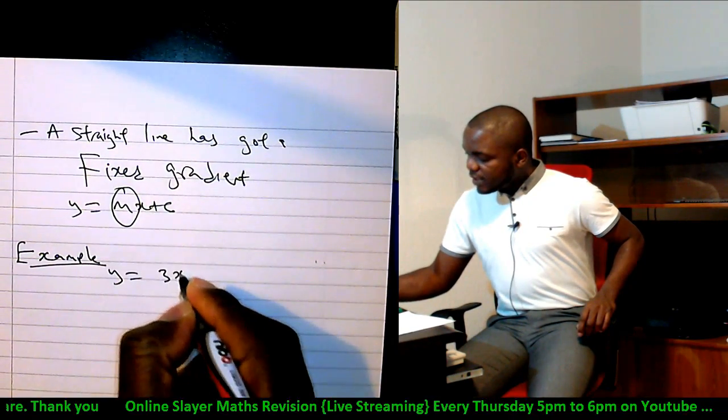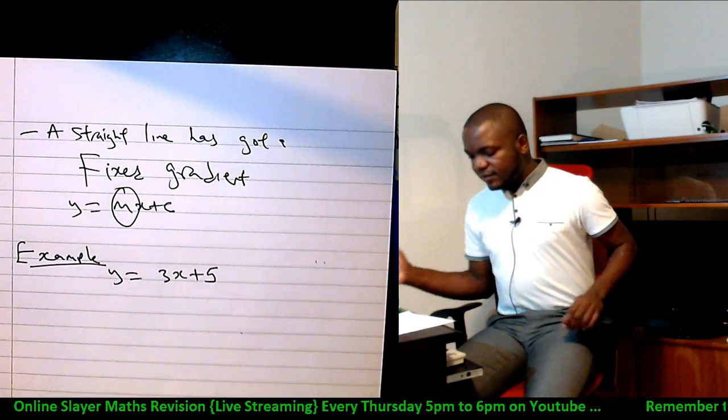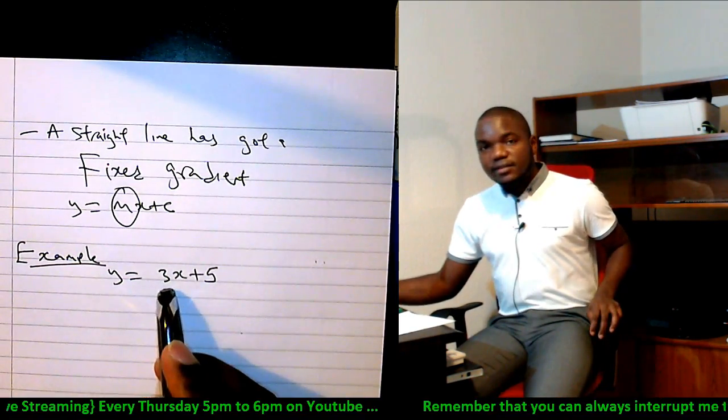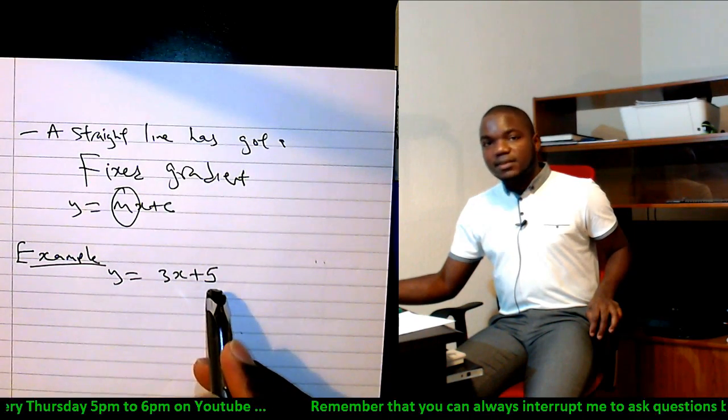y equals 3x plus 5. This is a straight line with a gradient of 3 and a y-intercept of 5.